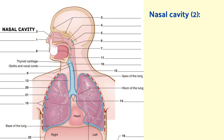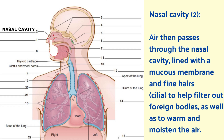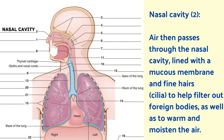Nasal cavity. Air then passes through the nasal cavity, which is lined with a mucous membrane and fine hairs called cilia, to help filter out foreign bodies as well as to warm and moisten the air.